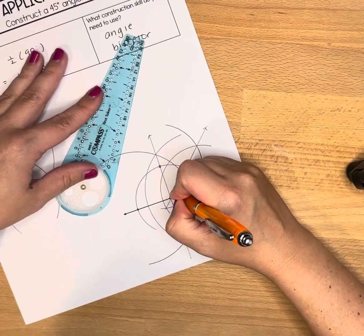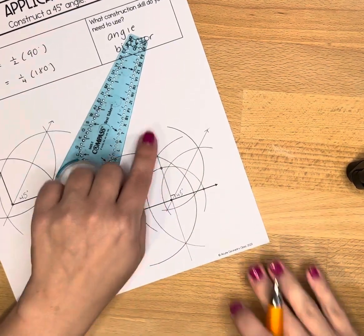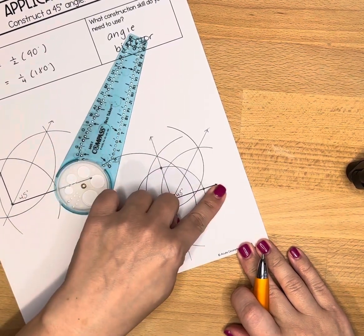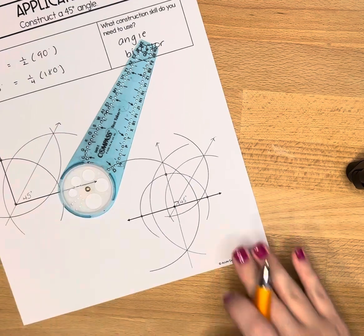And here is our 45-degree angle. So we basically took the 180-degree angle, created a 90-degree angle, then split that in half to get 45 degrees.